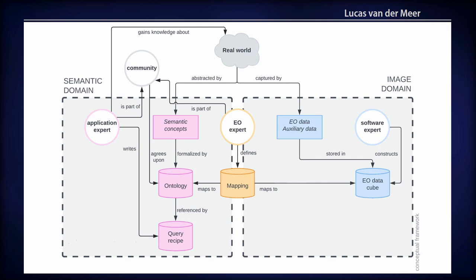Then we have two abstract domains in our framework, which here on the right is the image domain. This is the domain, the abstract domain that contains the numbers, that contains the data. On the left, we have what we call the semantic domain. And this contains the real world concepts. So this is a conceptualization of things that we see in the real world when we look outside. So here we have the real world. That's, in the end, what we're all interested in. That's what we want to analyze. The real world is captured by earth observation data. We have the satellites going around the earth and they capture the real world. And then this data, our numbers, and they are stored in this earth observation data cube. You can also have extra data in there, for example, DEMs, everything that can help the EO expert to accurately interpret this data and to represent concepts with it. And the software expert is then the one that constructs this data cube and does the whole technical infrastructure, cloud infrastructure.